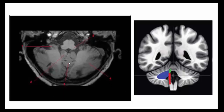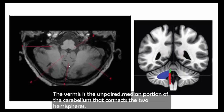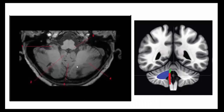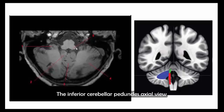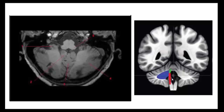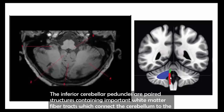This is the vermis. The vermis is the unpaired median portion of the cerebellum that connects the two cerebellar hemispheres. This is the inferior cerebellar peduncle on axial view and coronal view. The inferior cerebellar peduncles are paired structures containing important white matter fiber tracts which connect the cerebellum to the medulla.